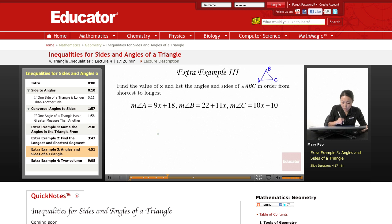So I know that measure of angle A plus measure of angle B plus measure of angle C is equal to 180. That's the angle sum theorem. All three angles of a triangle add up to 180. So then I'm just going to substitute all this in. 9x plus 18 plus 22 plus 11x plus 10x minus 10 is going to equal 180.